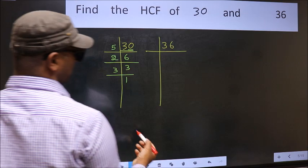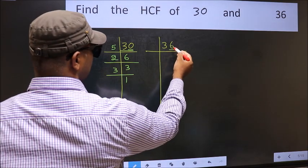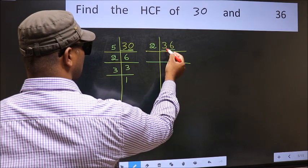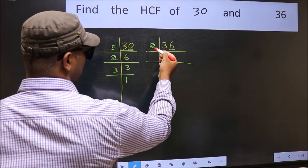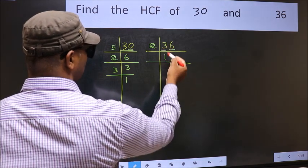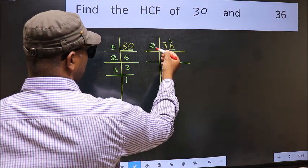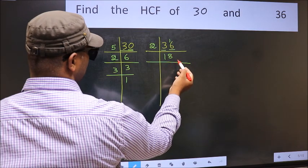Now the other number. Last digit 6, even, so take 2. First number 3. A number close to 3 in the 2 table is 2 times 2. 3 minus 2 is 1, 1 carried forward, 16. When do we get 16 in the 2 table? 2 times 8 is 16.